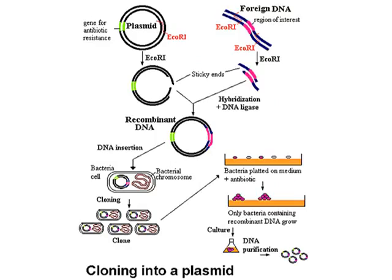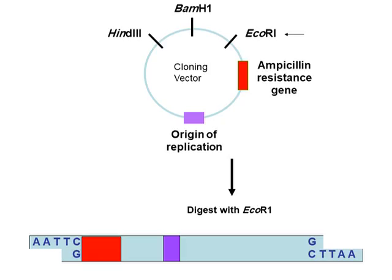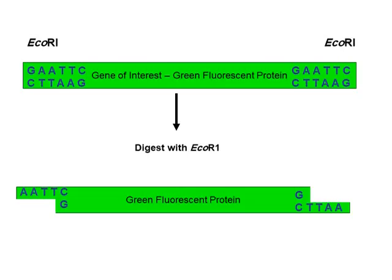أستخدم genetic markers — مثل الـ antibiotic resistance — لانتخاب البكتيريا التي حدث فيها الـ transformation. على سبيل المثال، في الـ cloning vector أضع الـ ampicillin resistance genes كـ marker، ثم أجري الـ digestion بالـ EcoR1. كما أُضيف معه الـ green fluorescence protein (GFP).